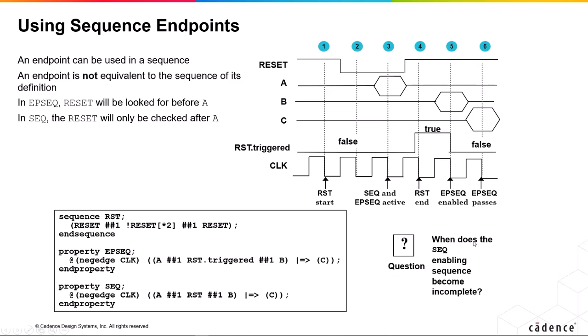The question being asked is when does the seek enabling sequence become incomplete? If you look at the evaluation of this property, we've got A occurring in that cycle there, followed by this sequence RST. So reset high, we're continuing evaluation of the property cycle four. Cycle five, we're not seeing not reset. We don't see not reset. So therefore the evaluation starts at cycle three because A occurs, but it ends at cycle five because we don't observe this sequence continuing because reset is true instead of false.